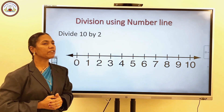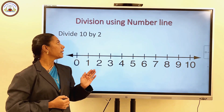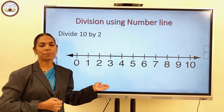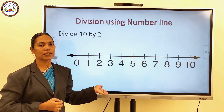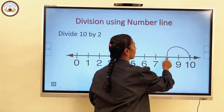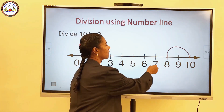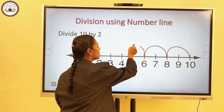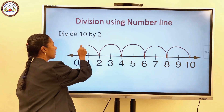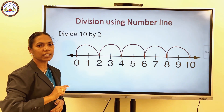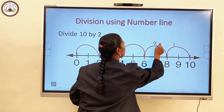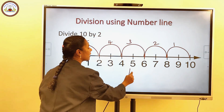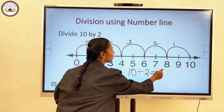Next topic is division using a number line. Divide 10 by 2. Starting from 10, skip backward 2 numbers till you reach 0. Skip backward: 8, 6, 4, 2, 0. How many steps did we take? 1, 2, 3, 4, 5. So we can write 10 divided by 2 is equal to 5.